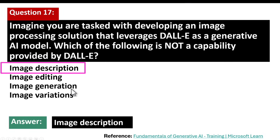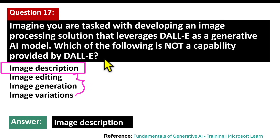DALL-E can create entirely new images from scratch based on a given text description. Image editing allows modification of an existing image. Image variations means DALL-E can produce several variations of a particular image based on the same or slightly altered prompts. These three are features of DALL-E; image description is not.